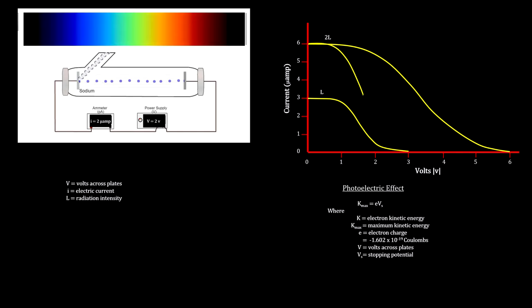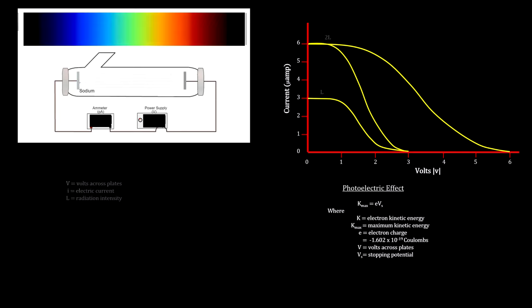But what we actually see is that although the number of electrons varies with the light intensity, the maximum kinetic energy of these electrons remains the same. In addition, electrons are emitted without any delay. Except that for really low frequency light, no electrons are emitted at all, no matter how intense the light.